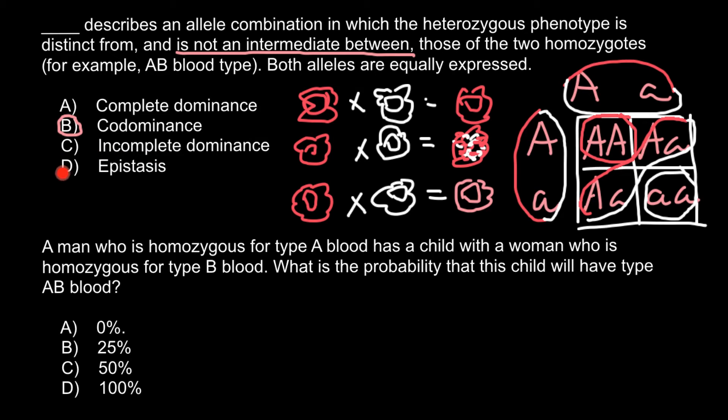Epistasis is the last answer choice. This refers to when one gene regulates the expression of other genes — for example, a gene not directly involved in pigment production whose presence or absence may affect other genes in the biological pathway and thereby affect pigment production.